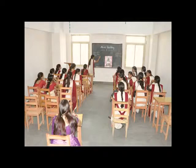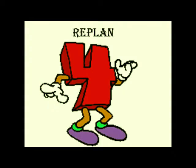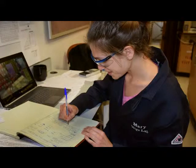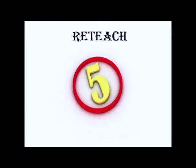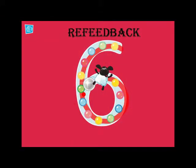The third stage is feedback. Here the observer analyzes the performance and discusses it with the teacher trainee. The fourth stage is replan, where the teacher trainee replans or modifies the existing micro lesson plan. The fifth stage is reteach, where the teacher trainee reteaches the same micro lesson.